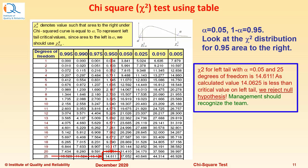As calculated value 14.0625 is less than critical value on the left tail, we must reject the null hypothesis and therefore, management should recognize the team considering 95 percent confidence level.